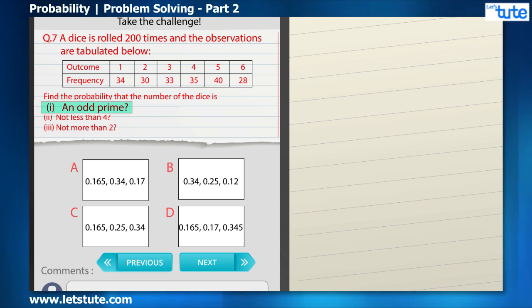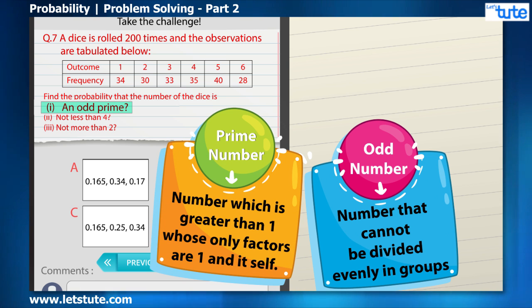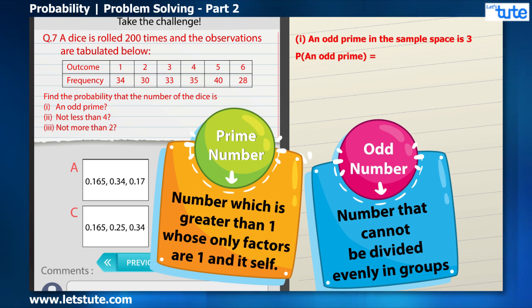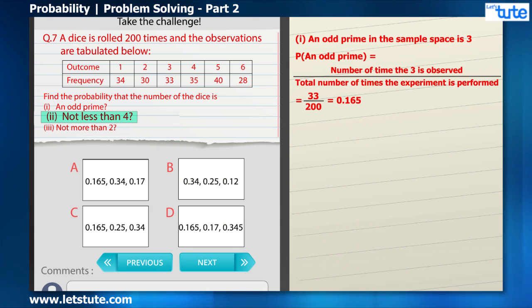Here again, we have to notice what exactly the question is asking for. For the first part, we have to find an odd prime. So for that, we need to know what is an odd number and also what is a prime number. The first odd prime number that we have in the sample space is 3. Therefore, the probability of getting an odd prime will be equal to the number of times 3 is observed divided by the total number of times the experiment is performed, which comes to 33 divided by 200, which comes to 0.165.